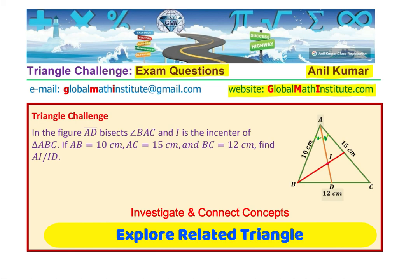But see, BI should also be the angle bisector of angle B because I is the incenter. So we can conclude from here: since I is the incenter, BI bisects angle ABC.